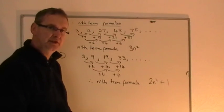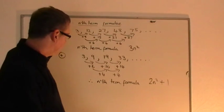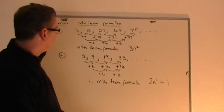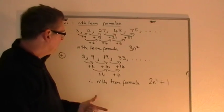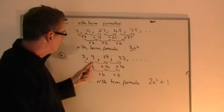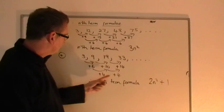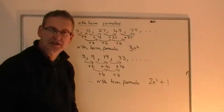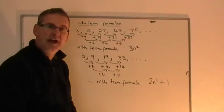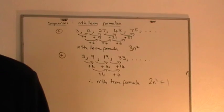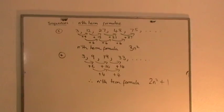So there's the second video showing some basic ideas of how to get an nth term formula when you have constant second differences, which all lead to some sort of n squared nth term formula.